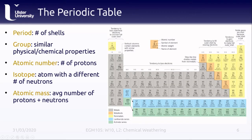This is the periodic table of elements, which contains information about all of the different chemical elements we know of, arranged in a way that lets you quickly see some of the different properties of different elements. The rows are called periods and represent the number of shells that the atom has, going up to seven electron shells. The columns are called groups and represent elements with similar physical and chemical properties. Each element has an atomic number, which is just the number of protons the atom has — if an atom adds a proton, it is no longer the same element.